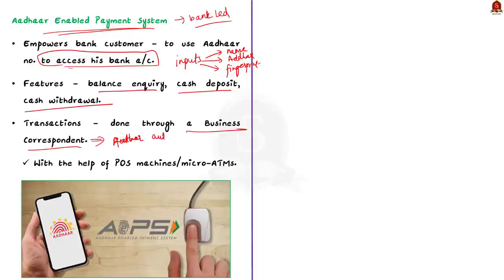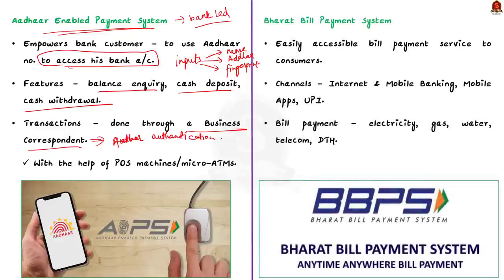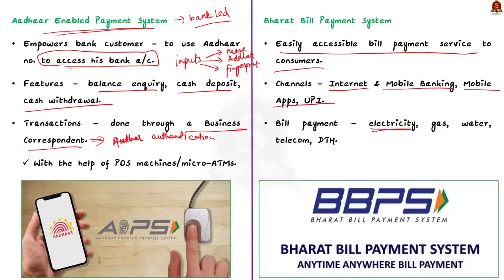Now, Bharat Bill Payment System or BBPS. This is a one-stop platform that provides easily accessible bill payment services to customers. It provides services through multiple channels like internet banking, mobile banking, mobile apps, UPI, etc. Users are able to make payments across various categories including electricity, gas, water bills, telecoms, and DTH — so sitting at the ease of your home, you will be able to make all the bill payments.